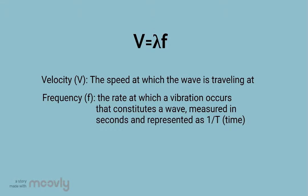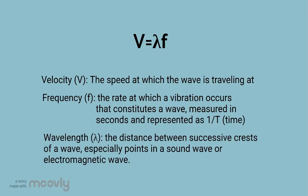Frequency is represented by 1 over T, period, and is the rate that a vibration occurs. A wavelength is the distance between successive crests or its original point.